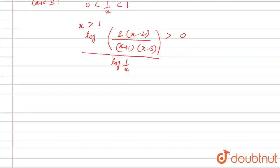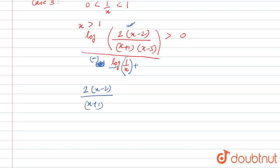We know that log(1/x) is positive and lies between 0 and 1, and when we apply the log function, this will give us a negative function. So we will consider this function as positive, meaning the inequality sign flips. What we get is 2(x minus 2) divided by (x+1)(x minus 5) is greater than or equal to 0. This will be the condition.